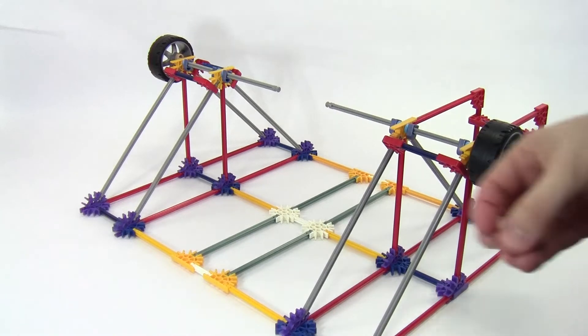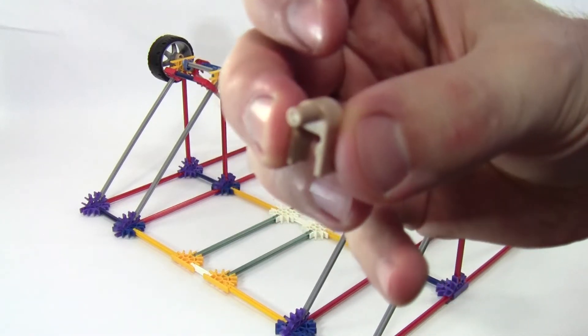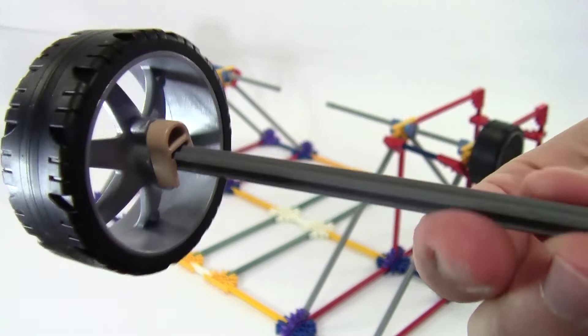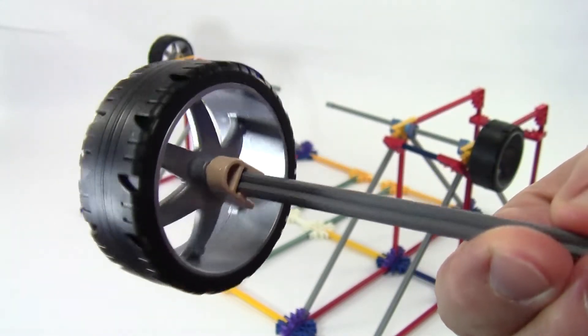With K'nex, you can do that using these small tan pieces. Here's a close up showing the wheel connected to the axle so they rotate together.